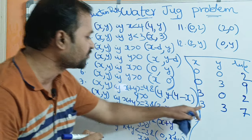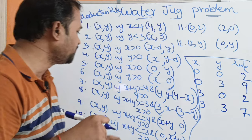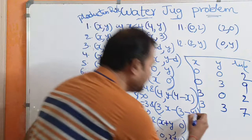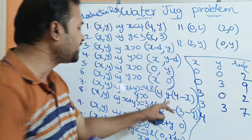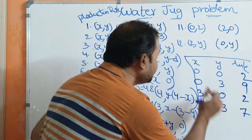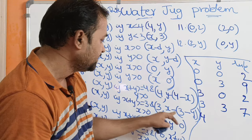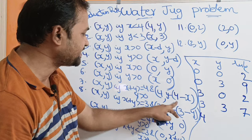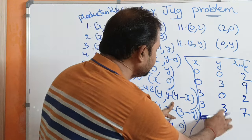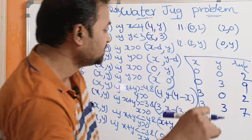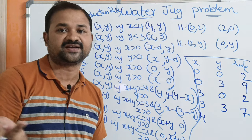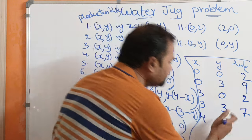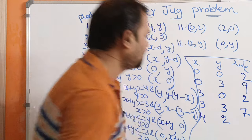Seventh rule check: x plus y = 3 plus 3 = 6, which is greater than or equal to 4 — condition true. y is greater than 0 — condition true. So x becomes 4, and y becomes y minus (4 minus x) = 3 minus (4 minus 3) = 3 minus 1 = 2. New state is (4, 2). We placed 1 liter from the 3-liter jug into the 4-liter jug.